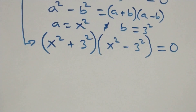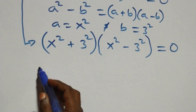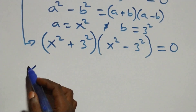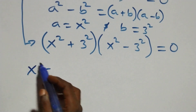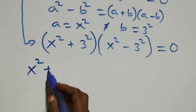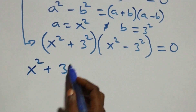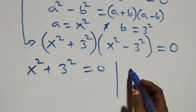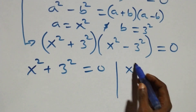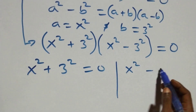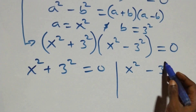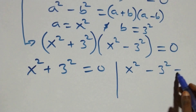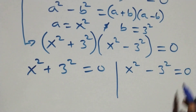From here we have two possible cases: the first is x squared plus three squared equals zero, or we have x squared minus three squared equals zero.